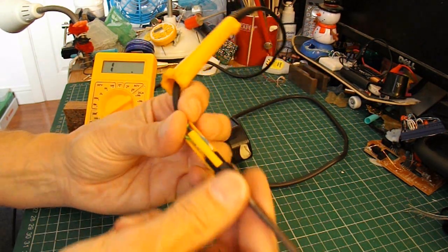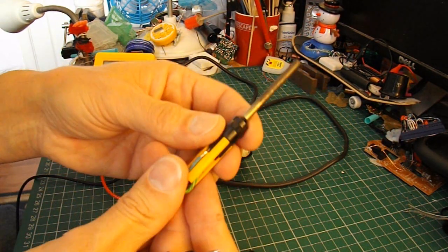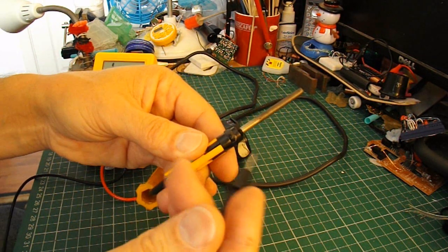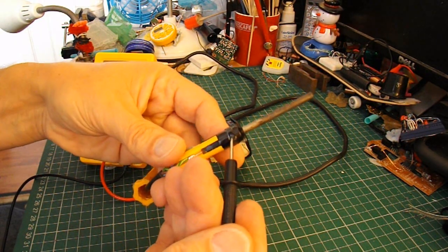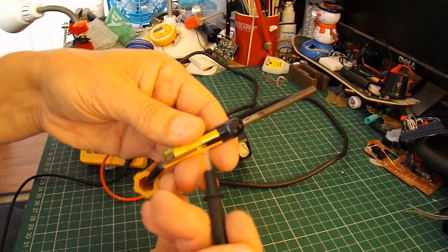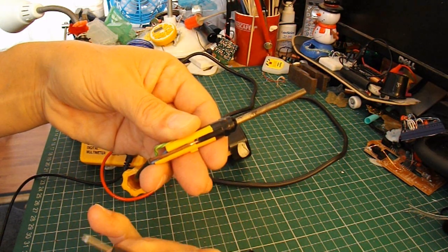What else can I tell you. It's not particularly clear, but written on the case it does actually say N for neutral. There's an earth mark there for the earth wire. And L for live on there.